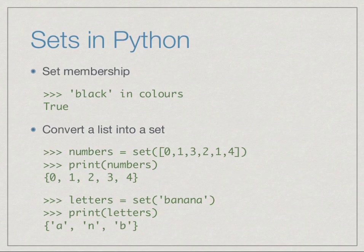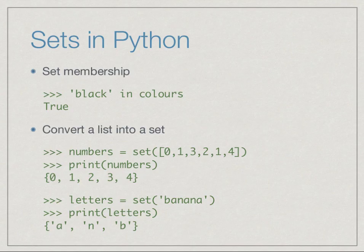An interesting feature is that a string itself is essentially a list of characters. So if we give a string to the set function, it produces a set which consists of individual letters from the string. If we give the string 'banana' to the set function, we get the three individual letters a, n, and b — without duplicates.